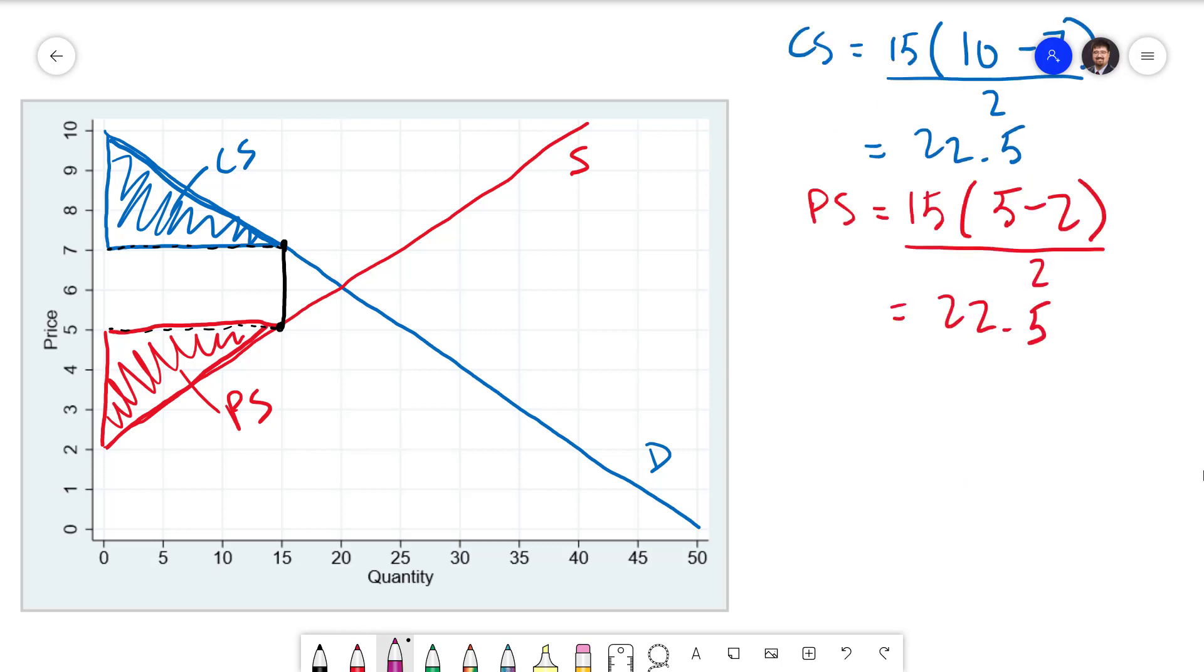What the government is getting out of this is the tax revenue. The tax revenue is simply the amount of the tax times the total quantity. 15 units are being transacted times a tax of 2 for a total of 30 tax revenue. On the graph this is going to be a rectangle. The base is the quantity and the height is the amount of the tax. The amount of the tax is the distance between the price that the buyers pay and the sellers receive, and the base is the quantity of 15. So our tax revenue rectangle is this one right here.